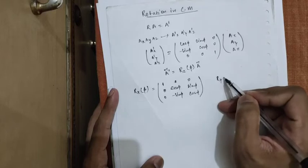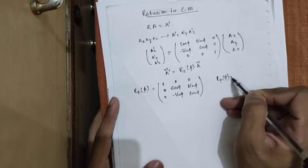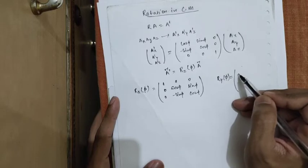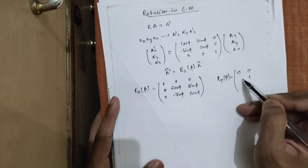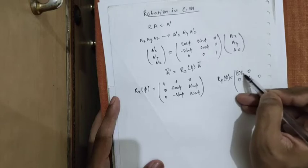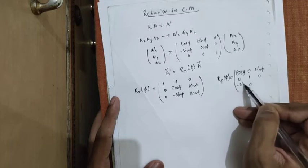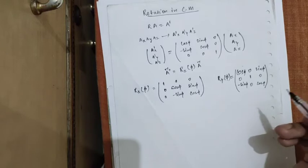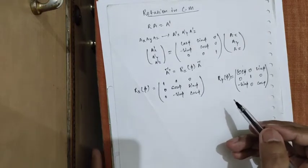The rotation matrix about the y-axis by angle phi is given as: [cos φ, 0, sin φ; 0, 1, 0; -sin φ, 0, cos φ].